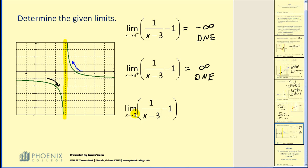The last limit is the limit as x approaches positive 3, which means we have to approach positive 3 from both sides. We can see from the two previous one-sided limits that if those don't exist, of course this one is not going to exist either. I hope that helps explain several techniques you can use to determine limits. Thank you for watching and have a good day.